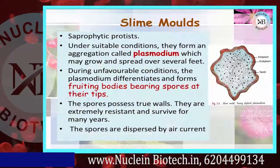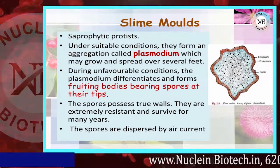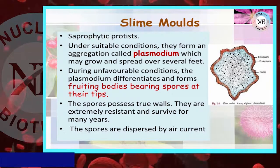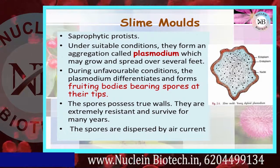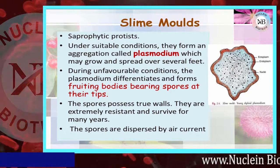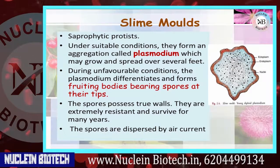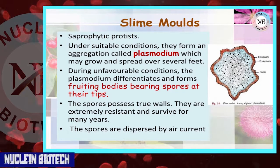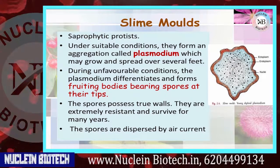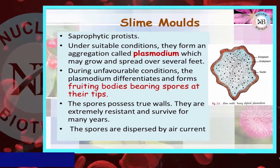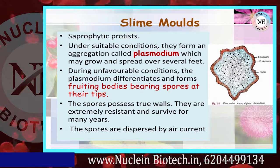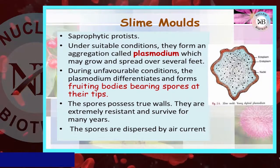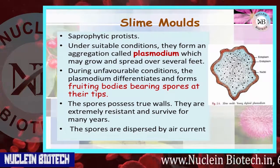Slime molds are saprophytic protists. Under suitable conditions they form an aggregation called plasmodium, which may grow and spread over several feet. During unfavorable conditions, the plasmodium differentiates and forms fruiting bodies bearing spores at their tips. Their spores possess true walls and are extremely resistant. In the diagram, ectoplasm, endoplasm, and nuclei are visible.